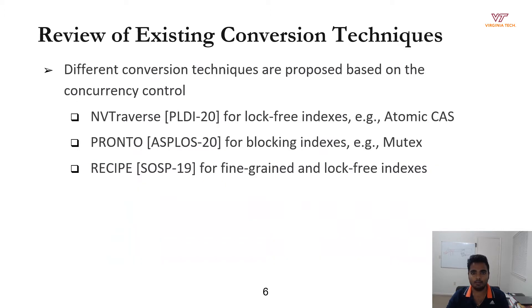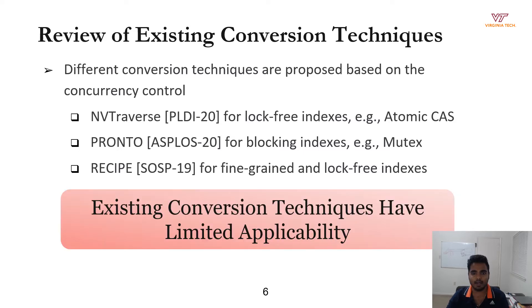We believe it is important to leverage DRAM indexes for NVMM software, which will save a lot of development effort and expedite the adoption of NVMM into real-world applications. Prior works also show that manual porting of legacy applications for NVMM is complex and error prone. So it is critical to provide a systematic path for developers to convert DRAM-based indexes and legacy applications for NVMM software. Very recently, a few conversion techniques and guidelines have been proposed, but these techniques limit themselves to support only a specific concurrency model.